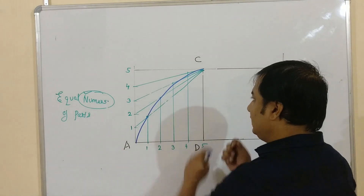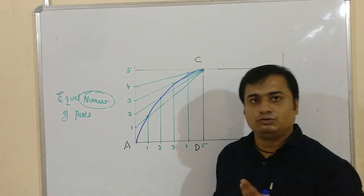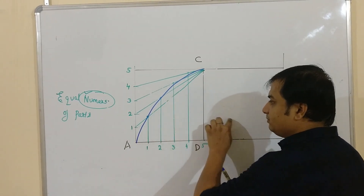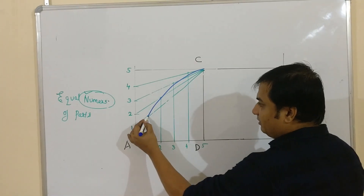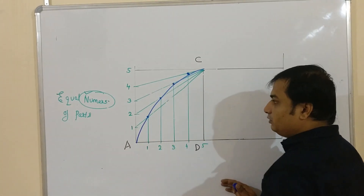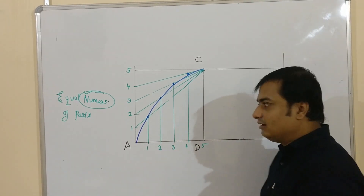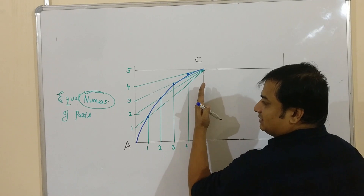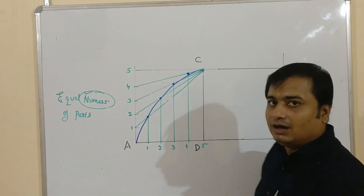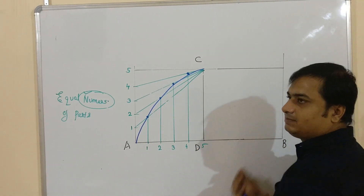Half of the parabola has been completed. For the remaining half, we have two options. The first option is to obtain the mirror image of the obtained points — we already have the first, second, third, and fourth points — by keeping CD as the axis of symmetry. Once you get the mirror image of these points, you can complete the parabola. The other method is to repeat the same procedure on the other side.